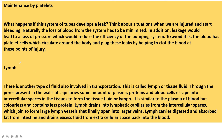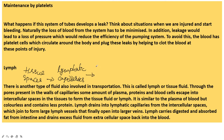The path of lymph circulation: from tissue spaces, through lymphatic capillaries, then through lymph vessels, and finally into the subclavian veins. Tonsils are masses of lymphatic tissue. Thymus and spleen are important lymphatic organs.